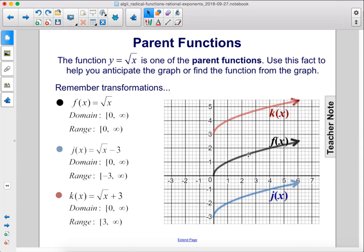We still have our parent function, the square root of x here in black, but now in blue we have the square root of x minus 3. Remember this minus 3 is not under the radical, and that vertically shifts down 3 units. In red we have k of x, and we have the square root of x plus 3, and this plus 3 is not in the radicand, that vertically shifts the graph up 3 units.